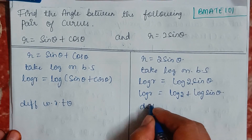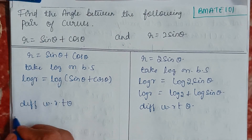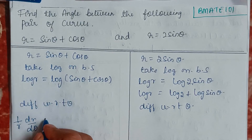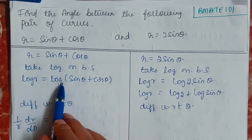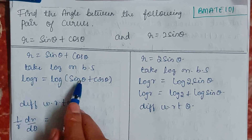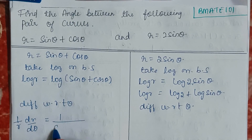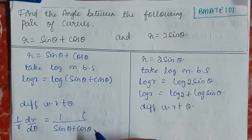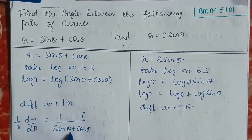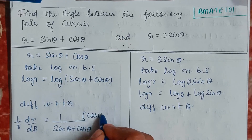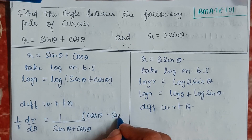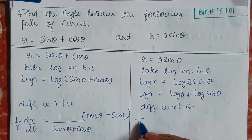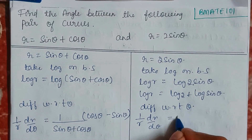Now I differentiate both equations with respect to θ. For the first curve, (1/r)(dr/dθ) equals the differentiation of log(sinθ + cosθ), which is 1/(sinθ + cosθ) multiplied by (cosθ − sinθ). For the second curve, (1/r)(dr/dθ) = 0 + (1/sinθ)·cosθ.